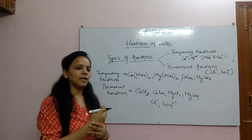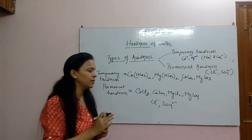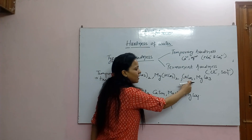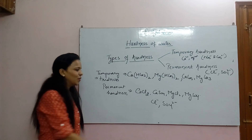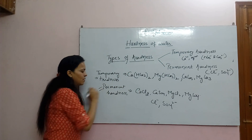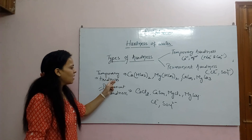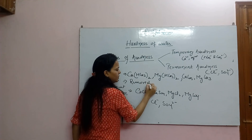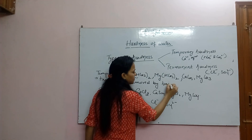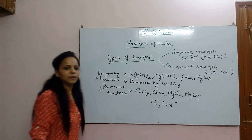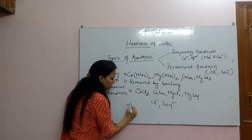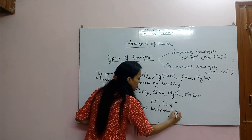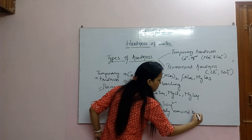Bicarbonate ions और carbonate ions — temporary hardness. Chloride और sulfate ions — permanent hardness. Temporary hardness can be removed by boiling, but permanent hardness cannot be easily removed by boiling.